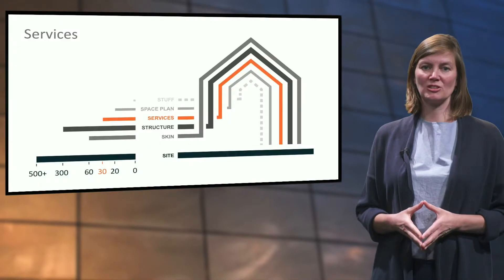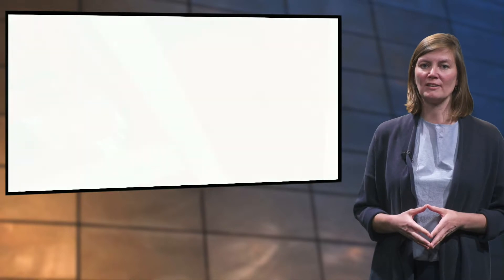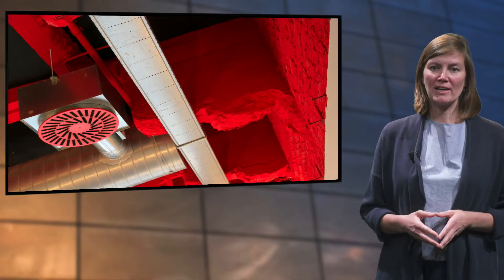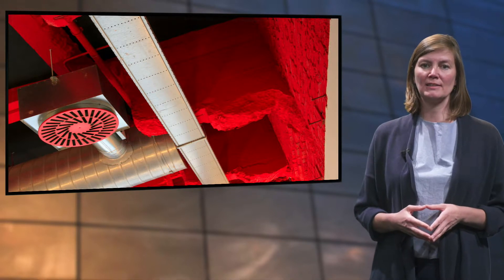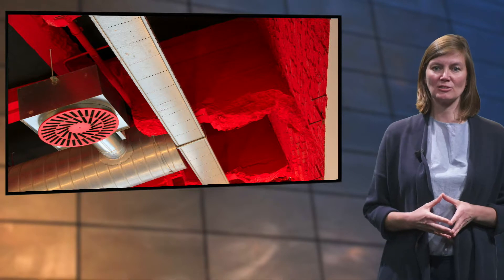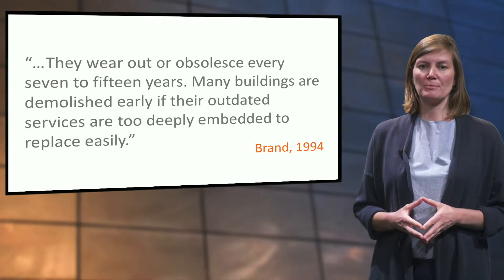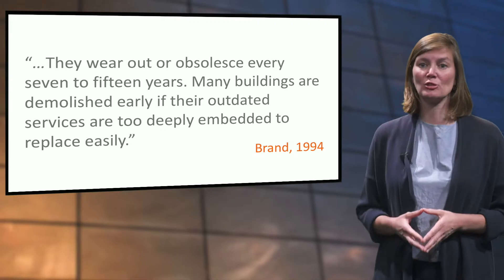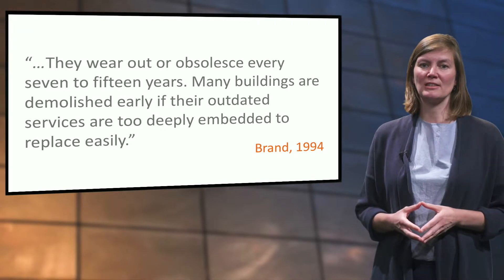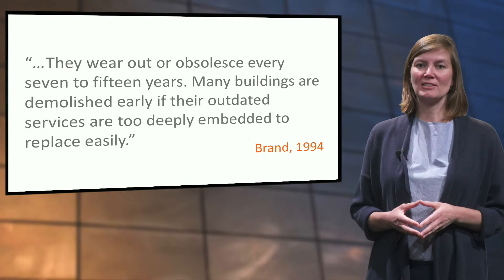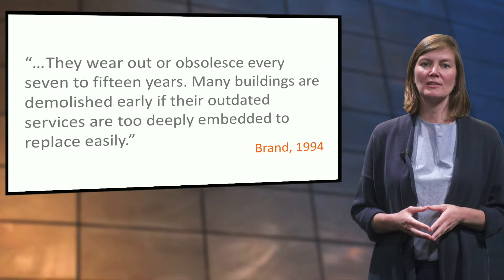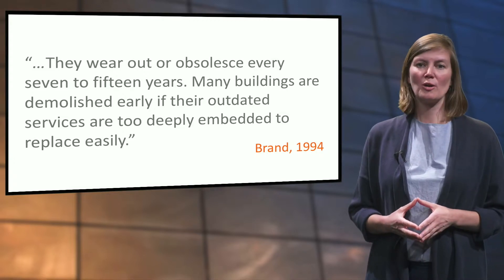The fourth layer consists of the services of a building — the so-called working guts: wiring, plumbing, fire extinguishing systems, air conditioning, heating and ventilation systems, as well as elevators and escalators. They wear out or obsolesce every 7 to 15 years. Many buildings are demolished early if their outdated services are too deeply embedded to replace easily, Brandt warns. The architects of BK City chose a very flexible strategy to accommodate all the services: all the lowered ceilings were taken out, ensuring beautiful high spaces, and all the installations are visibly mounted. If installations need to be repaired or renewed, this can be easily done.